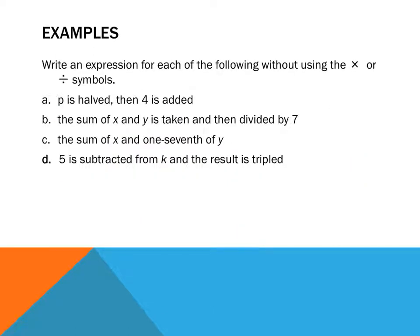Now, we're getting a little bit more tricky. We've leveled up a little bit. It says p is halved and then 4 is added. How do I halve p? We read it from left to right. p is halved and then 4 is added. How do I halve p? What operation do I use if I halve something? I divide it by 2. So p divided by 2 and then what do we want me to do? And then I add 4. That's a. Make sure you write these down.